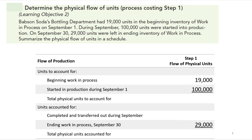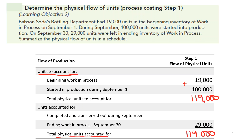We need to determine the total units to account for. Adding beginning work in process plus units started into production gives us 119,000 units to account for. It's kind of like a balance sheet — total physical units to be accounted for on both sides must be equal.